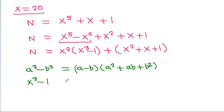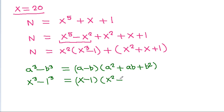So x cubed minus 1 — since 1 is the same as 1 cubed — will be equal to (x minus 1) times (x squared plus x times 1 plus 1 squared), that is (x minus 1)(x squared plus x plus 1).